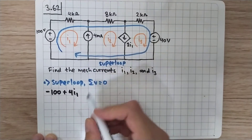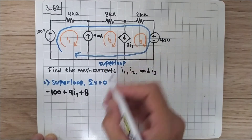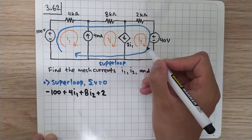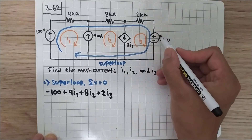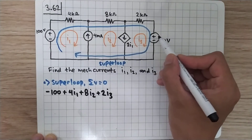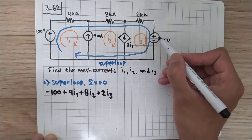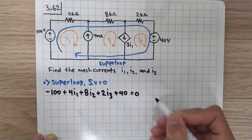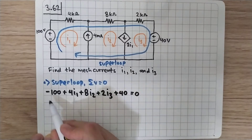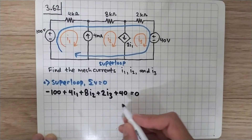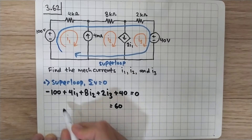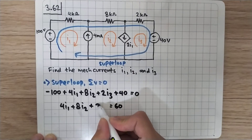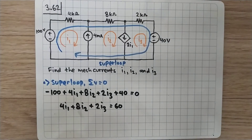Moving on, plus 8 times i2 for the 8 kilo-ohm resistor, and plus 2 times i3 for the 2 kilo-ohm resistor. Then we reach the voltage source where current goes from positive to negative, so the sign is positive and the value is 40. Setting the sum equal to zero: minus 100 plus 40 gives minus 60, so moving to the right-hand side we get 4i1 + 8i2 + 2i3 = 60. This is equation number one.